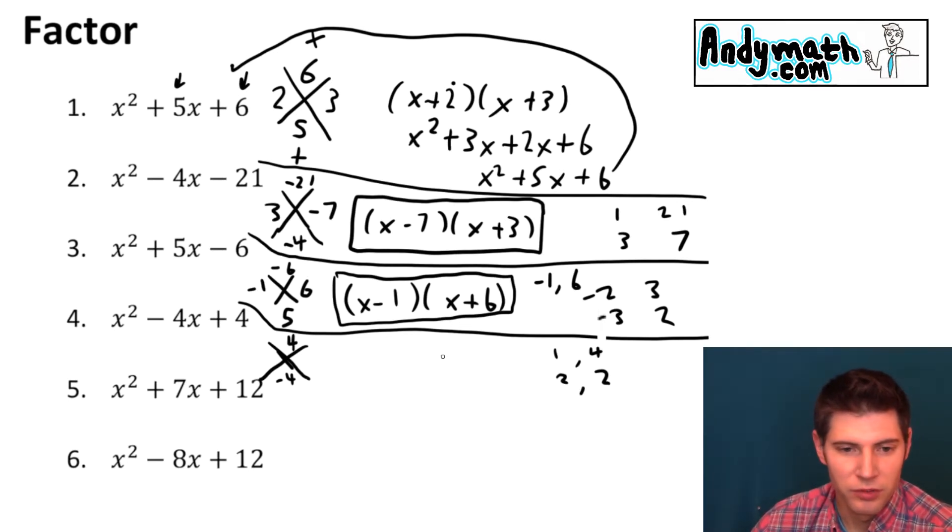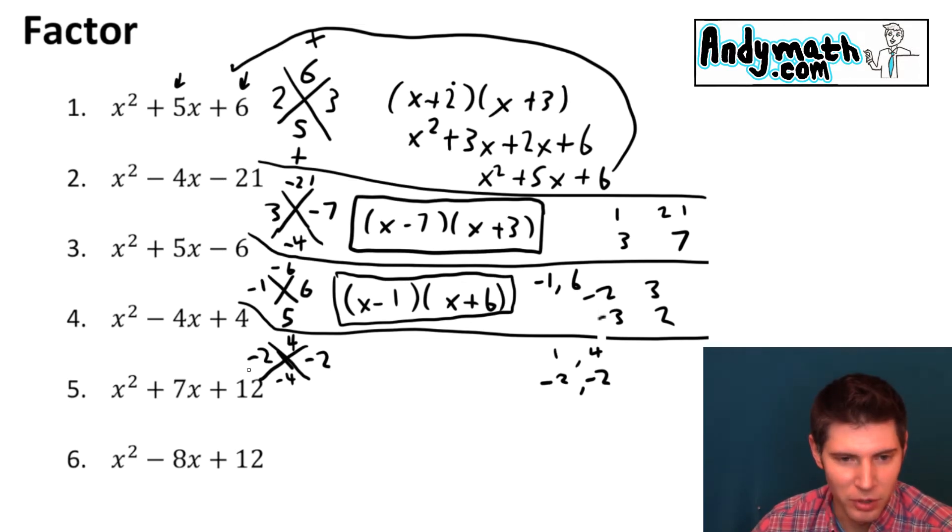Well there's no way to get 1 and 4 to give us 4 when we're adding but we can add up two negative 2's. So negative 2 plus negative 2 is negative 4 and negative 2 times negative 2 is positive 4. So now we have our two numbers.